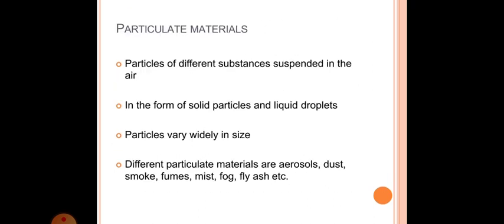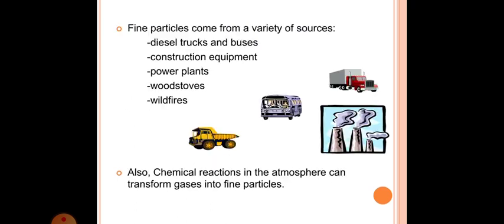Now comes particulate materials. Particles of different substances suspended in the air in the form of solid particles and liquid droplets. Particles vary widely in size. Different particulate materials are aerosols, dust, smog, fumes, mist, fog, fly ash, etc. Fine particles come from a variety of sources: diesel trucks and buses, construction equipment, power plants, wood stoves, wildfires, also chemical reactions in the atmosphere can transform gases into fine particles as shown in the figure.